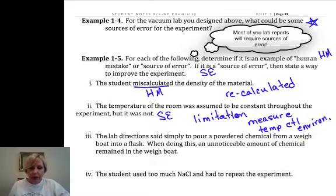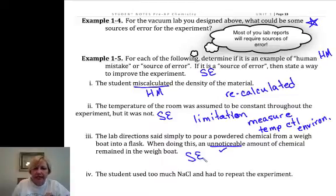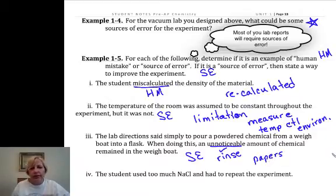Number three here. Lab directions said to simply pour your powdered chemical from the wayboat into the flask. When doing this, an unnoticeable amount of chemical remained on the flask. This is typically going to be, it's unnoticeable. You didn't make a mistake. You were doing a good job. This is typically going to be considered a source of error. And a way to accommodate that is if you're going to be dissolving it in water anyway, you may be able to rinse that wayboat with a little bit of the water that you're going to dissolve the substance in. Then there's, instead of wayboats, there's actually way papers that some of them tend to cling less to chemicals.